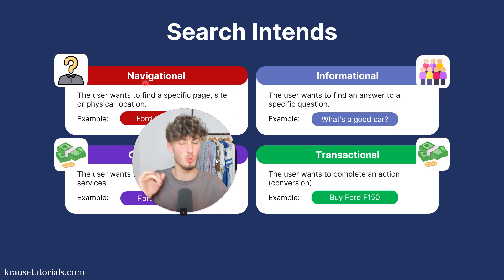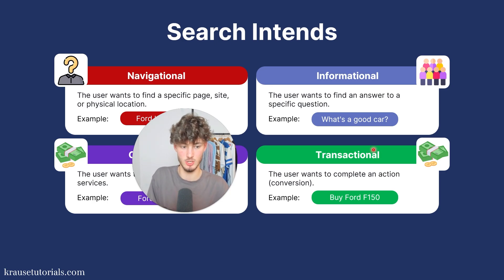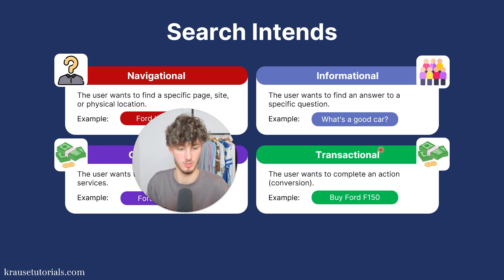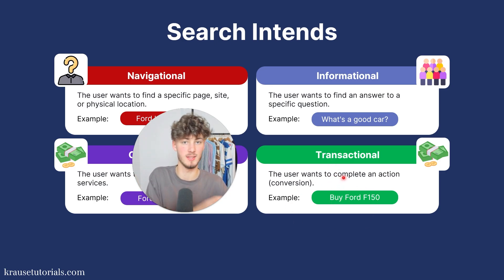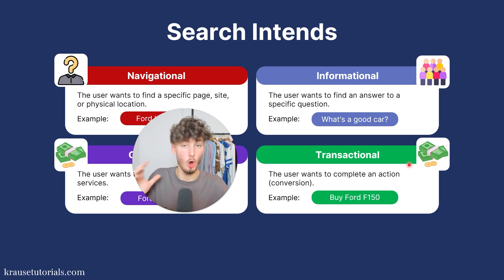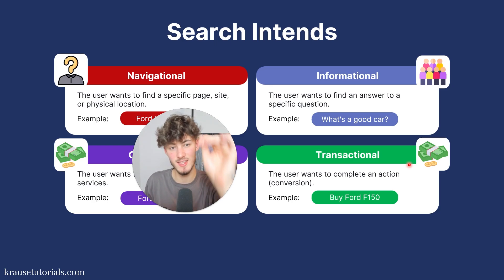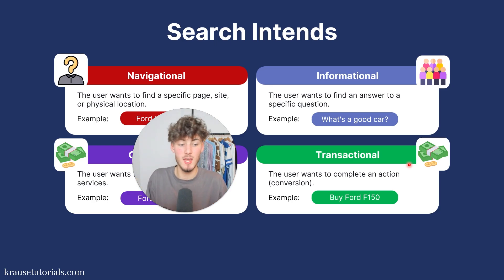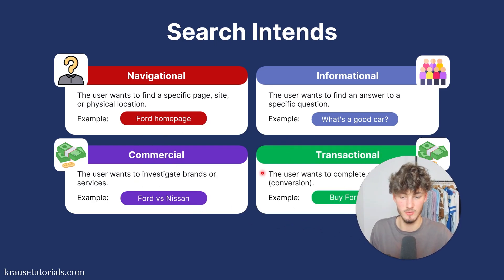The fourth and also very powerful search intent is transactional. Transactional keywords are search inquiries where the user wants to complete an action, most of the time a conversion — something like "buy Ford F-150," "buy this service," "where to buy that." These transactional keywords are super profitable to target, because people searching for "buy Ford F-150" have already made the buying decision and only need the link to purchase — they don't need convincing like you would on informational or commercial posts.